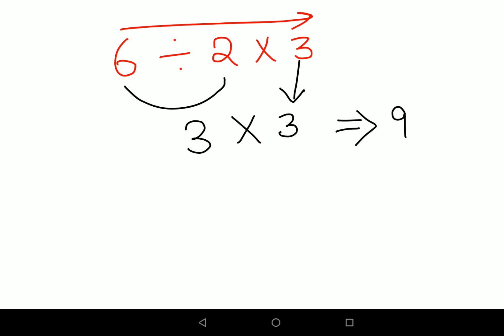Let's do this over here. 6 divided by 2 into 3, and we are going from left to right. So here what you will do is first you will do 6 divided by 2, that gets you 3, and this into 3 gets carried forward. So your final answer then comes out to be 9.